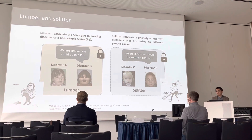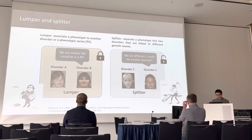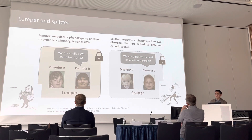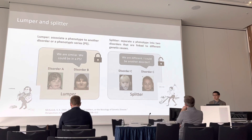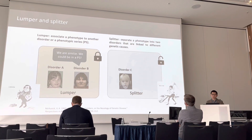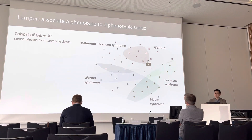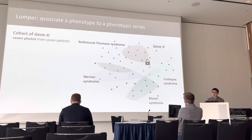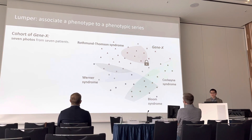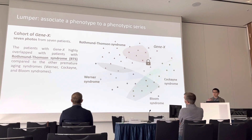The splitter means we want to separate a phenotype into two disorders with different genetic causes. For example, if a subset of Disorder C has different genetic causes and different facial phenotype compared to the rest, we move that subset out to become a separate disorder. I will take two cohorts as examples — since the manuscript is still under revision, I will use Gene X and Gene Y instead of the original gene names.